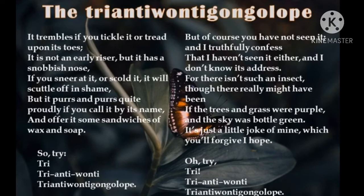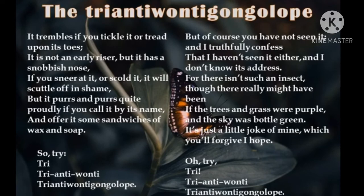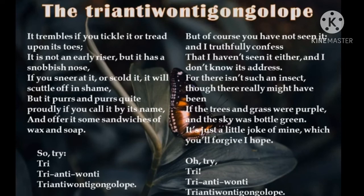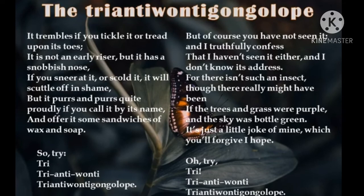But of course you have not seen it, and truthfully confess — the poet is telling that he knows you have never seen such an insect, because such an insect doesn't exist. Even the poet himself has not seen it yet. And he doesn't know its address — where it lives he doesn't know. For there isn't any such insect. Though there really might have been — if the trees and grass were purple and the sky was bottle green. Is this possible that the trees and grass are purple in color? No. So the existence of this Tri-Anti-Wanty-Gonglop in real life is also impossible.